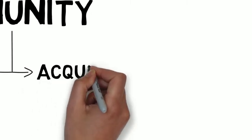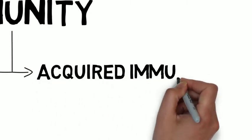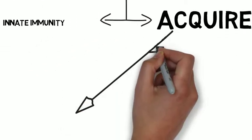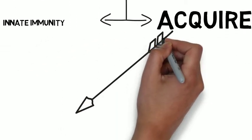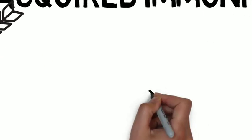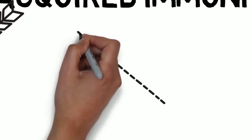And the second one is acquired immunity. Innate immunity means species immunity. The next one is active immunity and the next one is passive immunity.